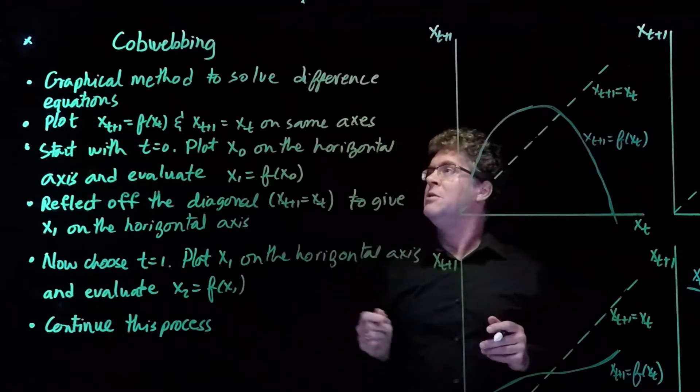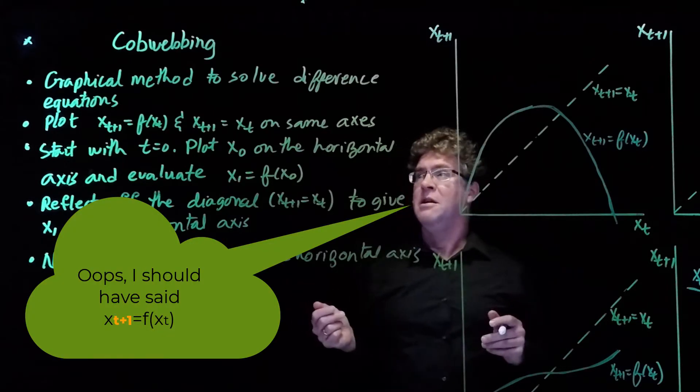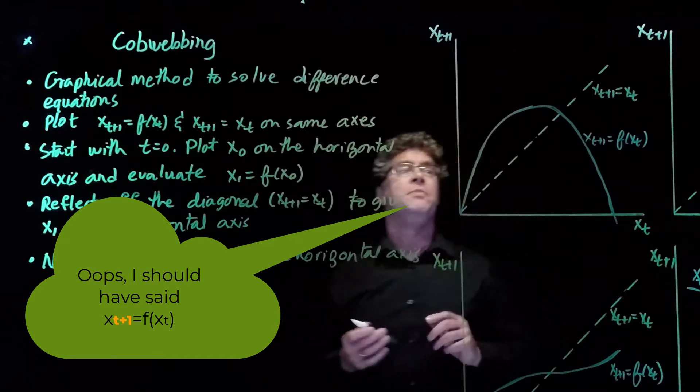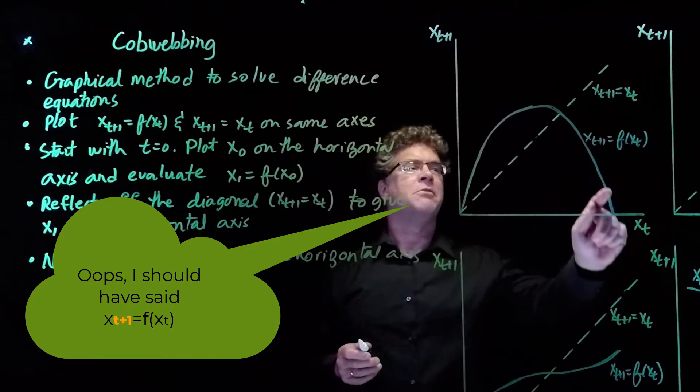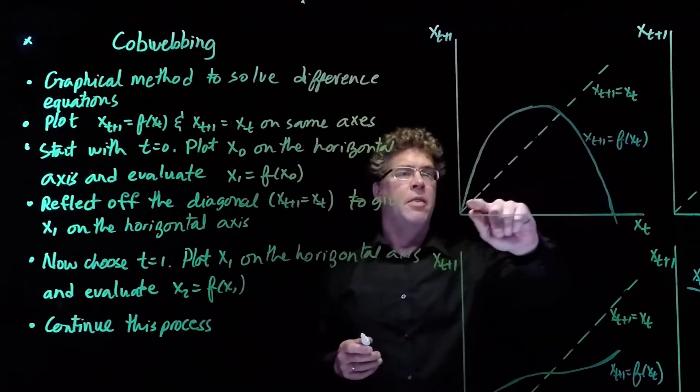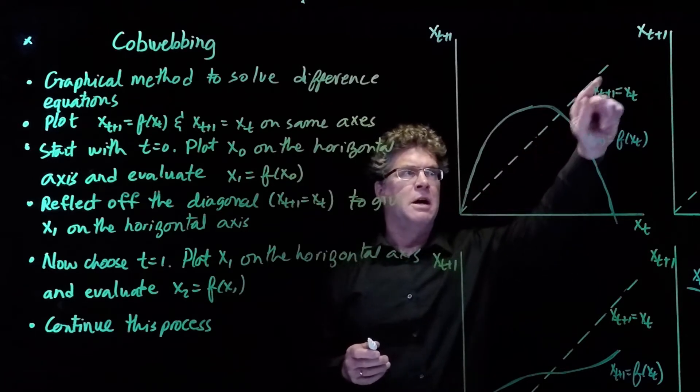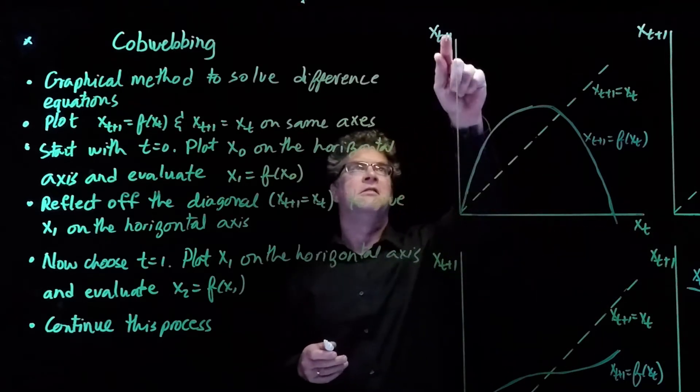The first thing we do is we plot x_t+1 = f(x_t) and x_t+1 = x_t on the same axes. So for example here, this line shows x_t+1 = f(x_t), it's a quadratic function, and then x_t+1 = x_t is a 45 degree line. The horizontal axis is x_t, and the vertical axis is x_t+1.